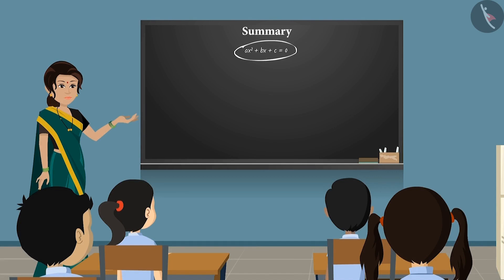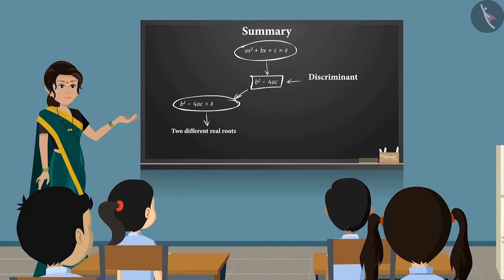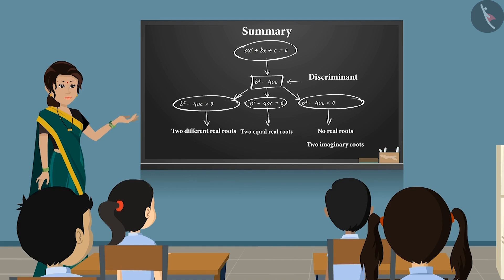Today we saw that for a quadratic equation: if the discriminant b squared minus 4ac is greater than zero, that is positive, then the equation will have two unequal real roots; if it is equal to zero, then the equation will have two equal real roots; and if it is smaller than zero, that is negative, then the equation will have no real roots or two unequal imaginary roots. In the next video, we will see some interesting examples based on this.